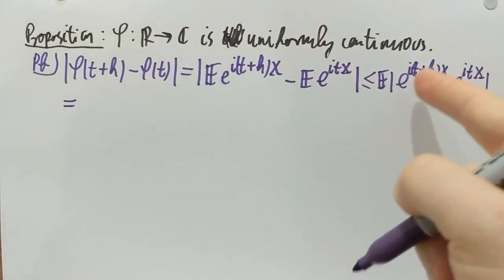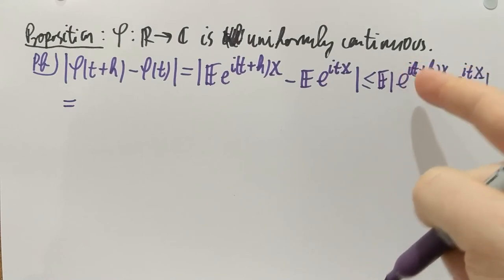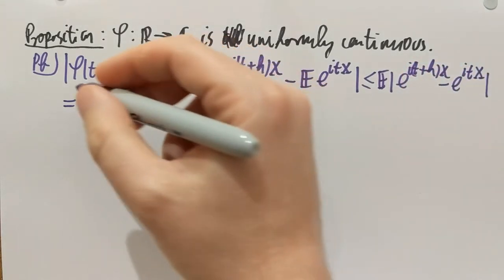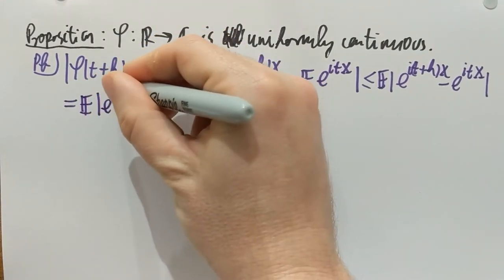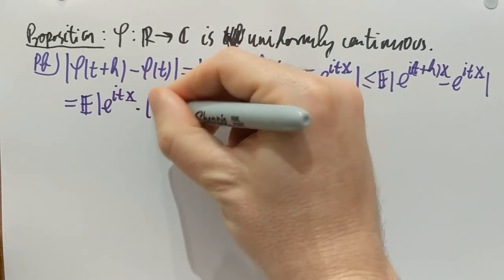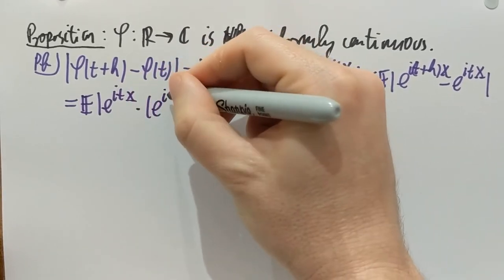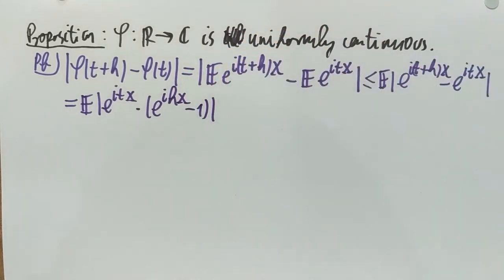Now, the exponential of i·t·x and i·h·x is going to become a product, which I can factor out. So, I write expectation of e to the i·t·x as a common factor. And that's multiplied by e to the i·h·x minus 1. This is my next step.